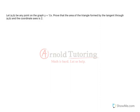Here we have a really good calculus question that involves some graphing, some thinking, and it's definitely not very basic. So we've got AB as any point on the graph Y equals 1 over X. Prove that the area of the triangle formed by the tangent through AB and the coordinate axes is 2.